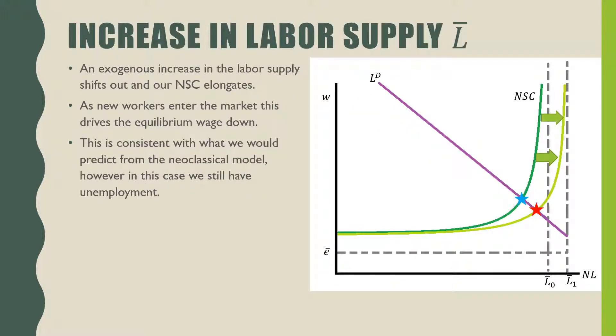For an increase in labor supply L bar, we're moving from L0 to L1. This elongates our no shirking condition as new workers enter the market. This drives down our equilibrium wage. This is pretty consistent with the neoclassical model, however we still have unemployment. In short, we move from the blue star to the red star where we drop the wages and increase the employment.